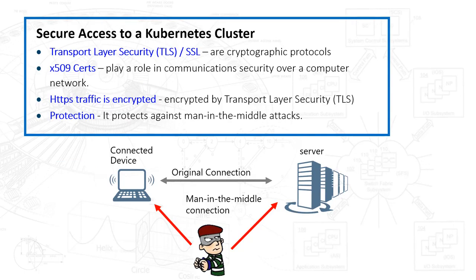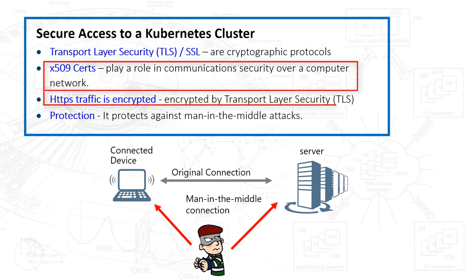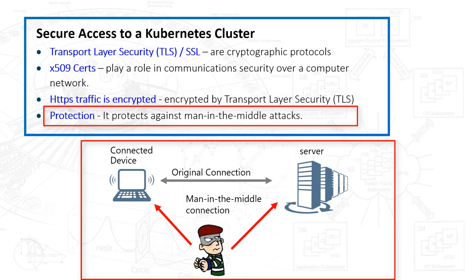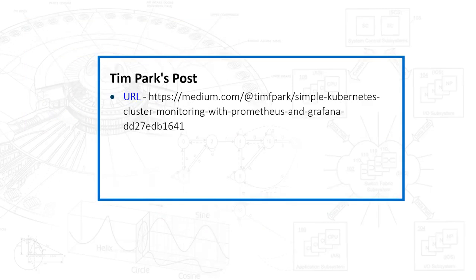We want to focus on secure access to this Kubernetes cluster. One of the ways we achieve that is by leveraging TLS, or transport layer security. We will leverage X.509 certificates, which play a role in communications across the server, making sure the traffic is encrypted. What we're trying to avoid is the man-in-the-middle attack — basically eavesdropping — whereby the attacker makes independent connections with the victims and relays messages to make them believe they're talking directly over a private connection, when in fact the entire conversation is controlled by the attacker. Tim Park has a great blog post that discusses some of these things.